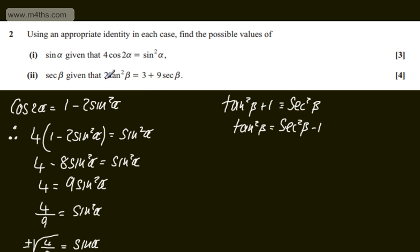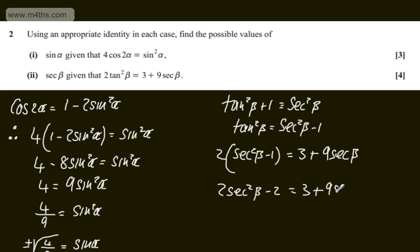I'm going to plug this in on the left-hand side. Substituting in, we'll have 2 lots of sec²β minus 1, and that equals 3 plus 9sec β. We now have a quadratic in sec β. Rearranging, 2sec²β minus 2 equals 3 plus 9sec β.